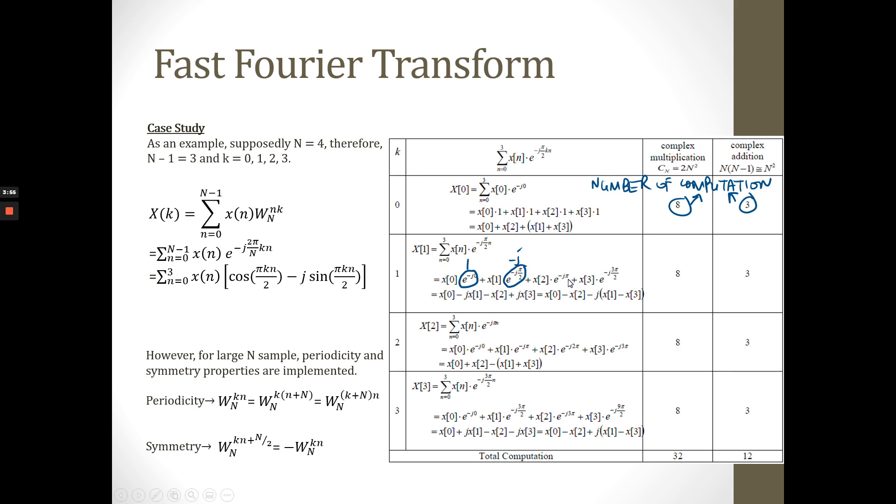This is based on N equal to 2, so it becomes negative 1, and for N equal to 3, it becomes positive j. We substitute back in this equation and rearrange based on this one. This is the real values and this is the imaginary values. So the complex addition computation is equal to 3 based on this arrangement.